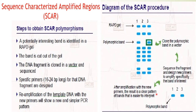After amplification with the new primer, the result is a clear pattern of bands that is easy to interpret. In the diagram, the original polymorphic band is cut out from the RAPD gel, cloned in a vector, sequenced, and a new primer is designed to amplify specifically the band of interest. The result is a clear pattern of bands that is easier to interpret.